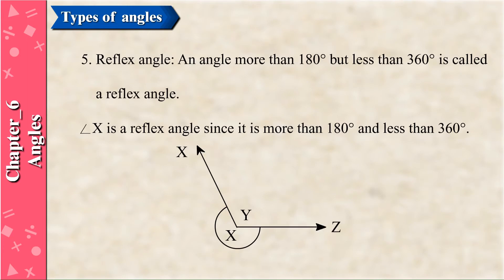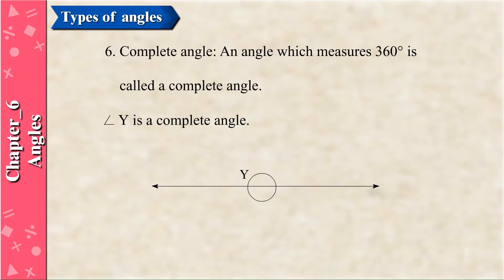Reflex Angle: An angle more than 180 degrees but less than 360 degrees is called a reflex angle. Angle X is a reflex angle since it is more than 180 degrees and less than 360 degrees. Complete Angle: An angle which measures 360 degrees is called a complete angle. Angle Y is a complete angle.